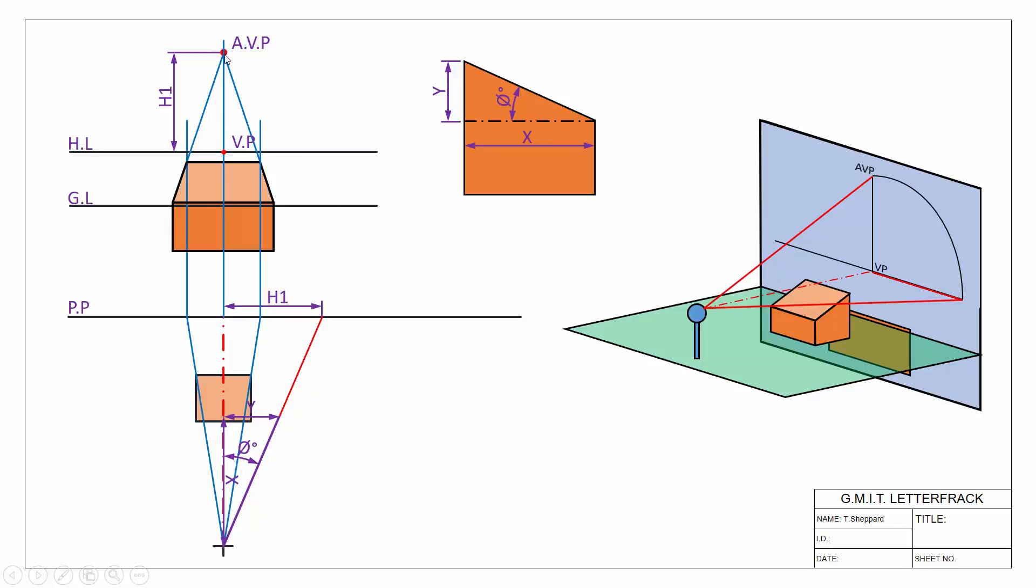So that's our auxiliary vanishing point. And we can see it happening in 3D here. And that's it, it's completed in 3D.